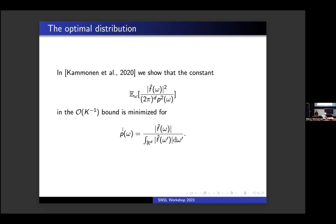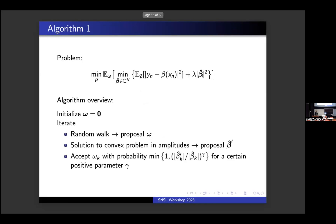That's good, but we don't have access to F and neither do we have access to F-hat — we only have the data. So how do we sample from this optimal p? That's not obvious. We recall the approach: the mean is greater than or equal to the minimum, then we minimize with respect to p. So the question becomes: how do we solve this problem?